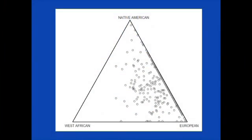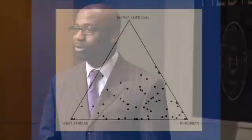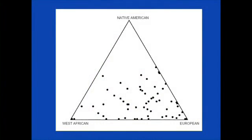Looking at Hispanic populations: these are Mexican Americans, and you'll notice the Native American and European distribution in their ancestry. These are Puerto Ricans - another group of Hispanics - with less Native American ancestry and much more West African ancestry. So even within the Hispanic population, we see a very diverse set of ancestries.